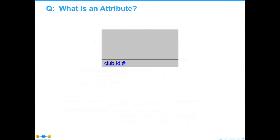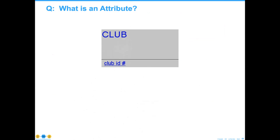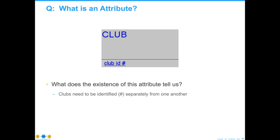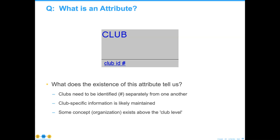For example, if I talk about a model here, the entity I'm going to talk about is something called a 'club.' You need to know: am I talking about a club like a baseball bat, or a club that people can be part of? What does the existence of the attribute 'club ID' tell us? It tells us that clubs need to be identified one from another, that club-specific information is likely to be maintained, and that some organization likely exists above the club level.